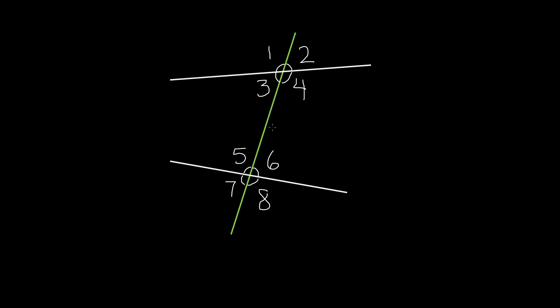Corresponding angles are still the angles in the same corners. Angle number three is below the line and on its left side, and angle number seven is also below the line and on its left side. So angle number three and angle number seven are two corresponding angles because they're in the same corners. This is an example of corresponding angles with two intersecting lines.